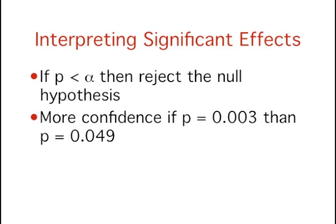When a probability value is below the alpha level, the effect is statistically significant and the null hypothesis is rejected. However, not all statistically significant effects should be treated the same way.